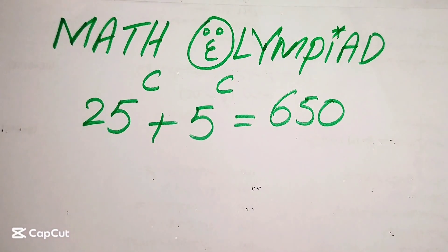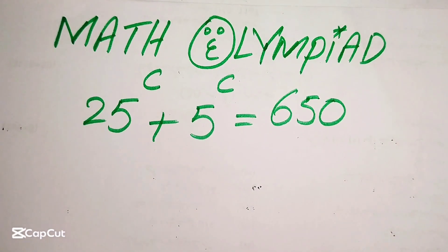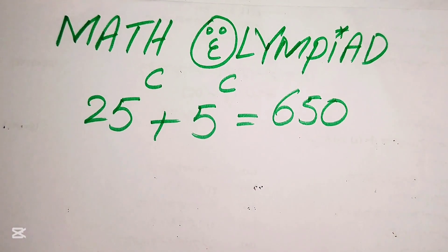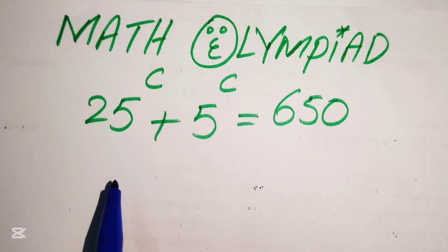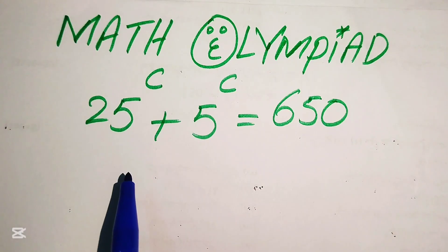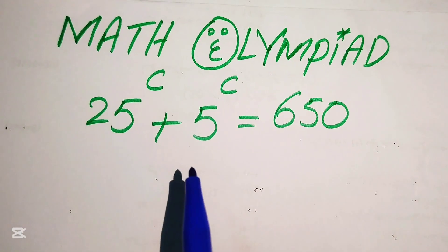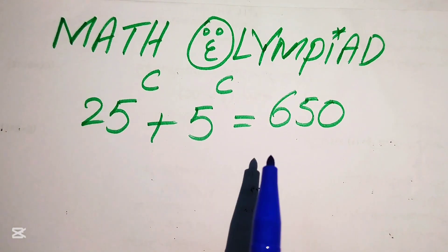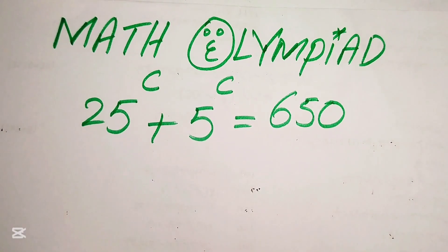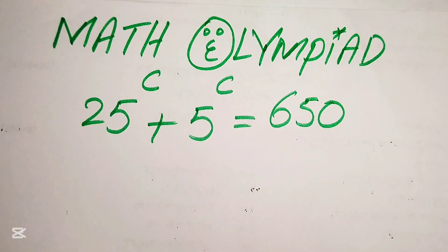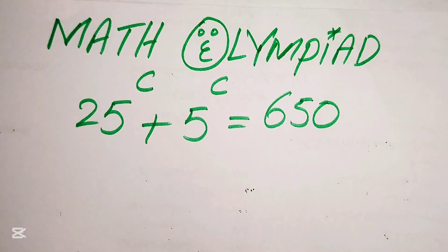Hello everyone, welcome to solve this nice mathematical algebra problem. We have 25 to the power of C plus 5 to the power of C equals 650, and we solve this problem for the values of C.